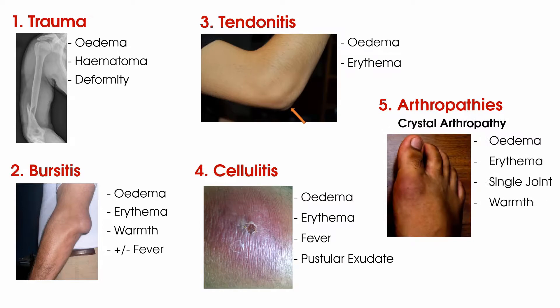Crystal arthropathies represent a group of conditions associated with deposition of mineralised material mimicking crystals within joints and surrounding tissues. Gout and pseudogout are some of the most recognisable forms. These conditions typically present in a single large joint with redness and swelling and may be warm to palpate. As with rheumatoid arthritis, consider whether the onset of symptoms can be linked to a mechanical cause and whether mechanical aggravating or easing factors are present. If not, a crystal arthropathy should be considered and the patient should consult their GP for further investigation.